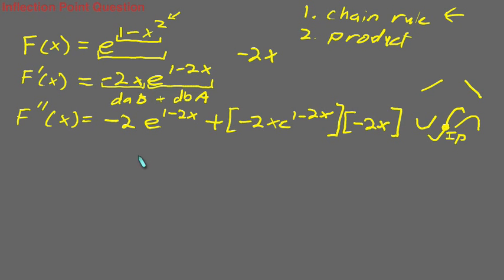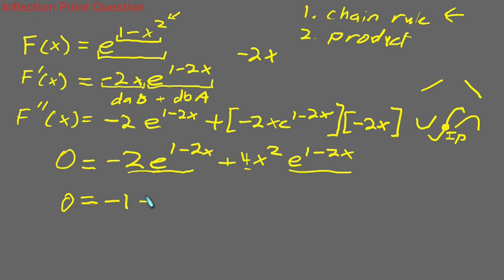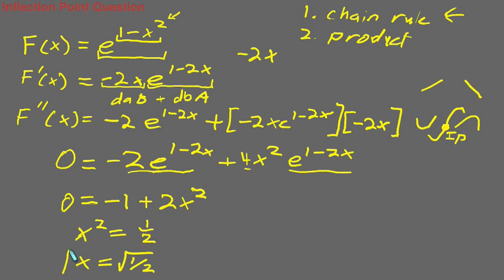These are common terms, so we can combine them: negative 2 times e to the 1 minus x squared, plus 4x squared times e to the 1 minus x squared. To find our critical points, we set everything equal to zero. We can see that 2e to the 1 minus x squared divides out, simplifying to negative 1 plus 2x squared equals zero. Solving for x gives x equals the square root of one half.